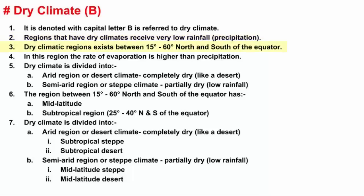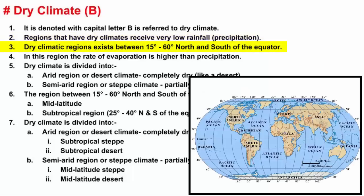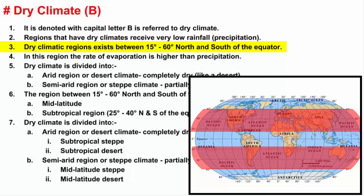Where do we find these kinds of places on Earth? They exist in areas between 15 to 60 degrees north and south of the equator.